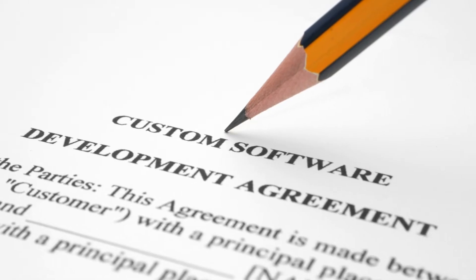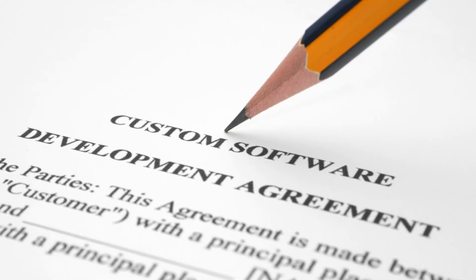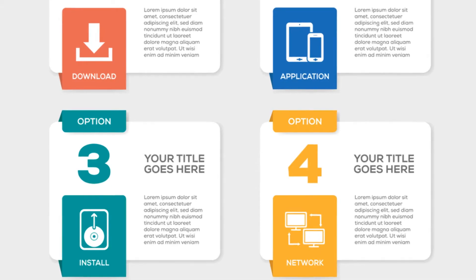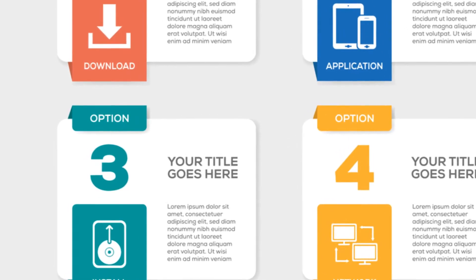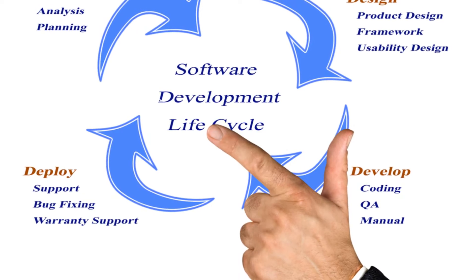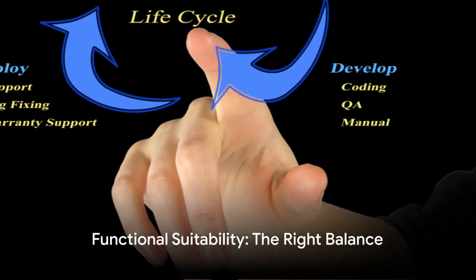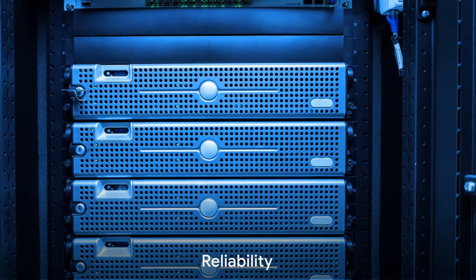Taken together, these sub-characteristics ensure that the software is not just functional but also suitable for the task at hand. They make sure the software is complete, correct, and appropriate. In conclusion, functional suitability is all about the software doing what it's supposed to do, effectively and efficiently — ensuring it provides value to the user and meets their needs and expectations. Functional suitability ensures that the software does what it's supposed to do: no more, no less.